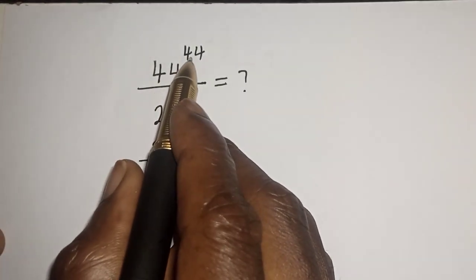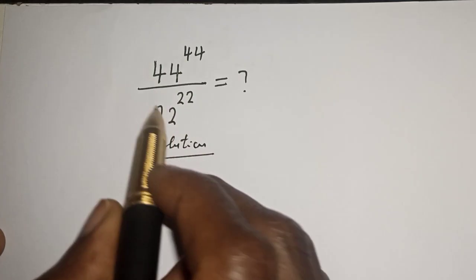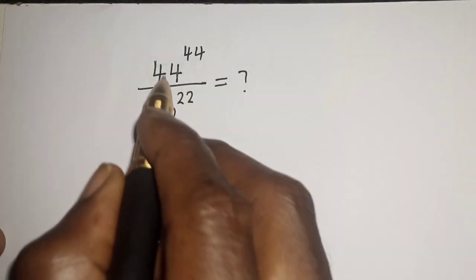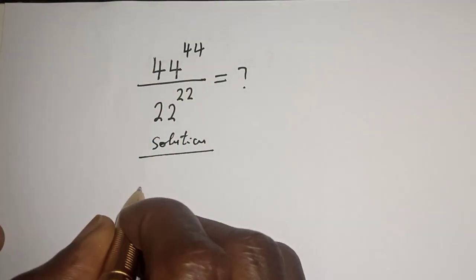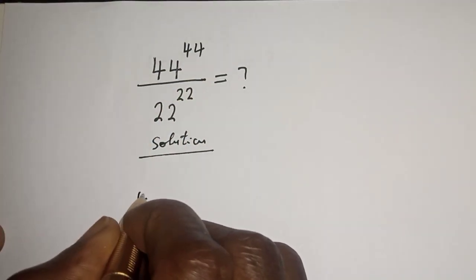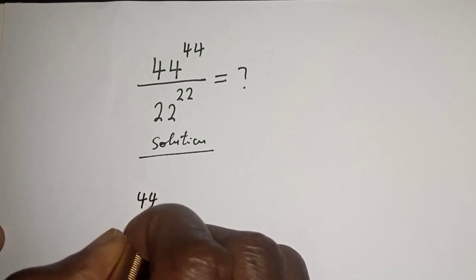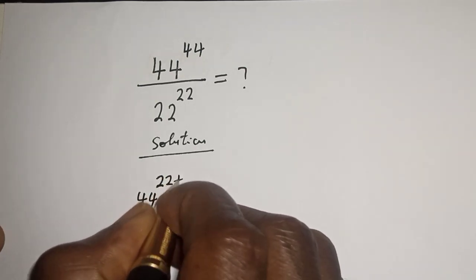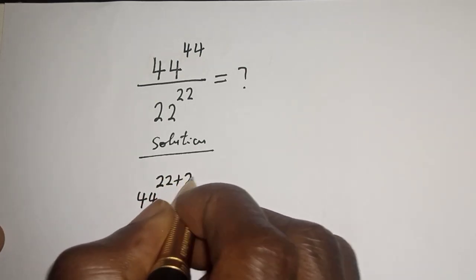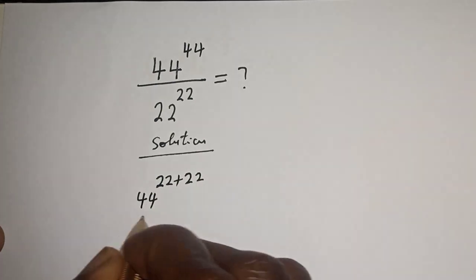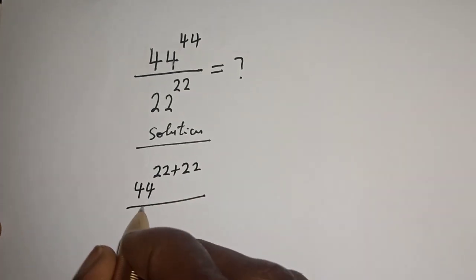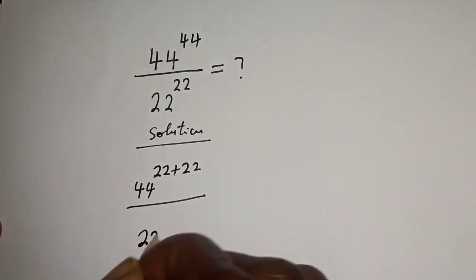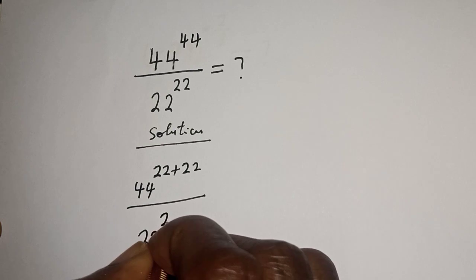We have 44 raised to power 44 divided by 22 raised to power 22. 44 raised to power 44 can be rewritten as 44 raised to power 22 plus 22, divided by 22 raised to power 22.